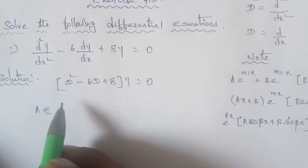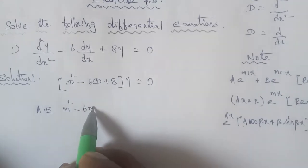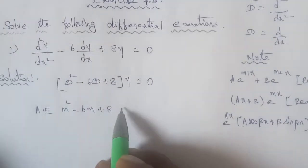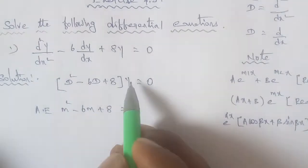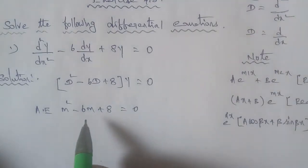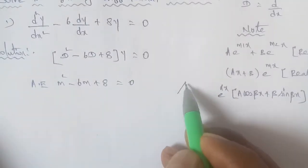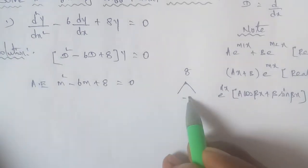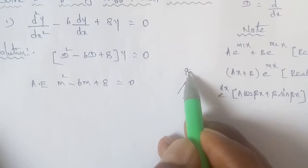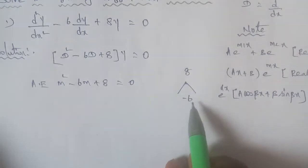The actual equation is what we need to solve: m² minus 6m plus 8 equals 0. We need to find what numbers add to minus 6 and multiply to give 8. So how do we factor this?